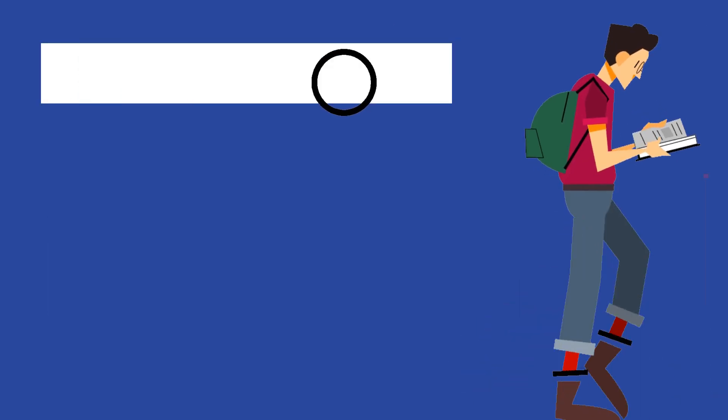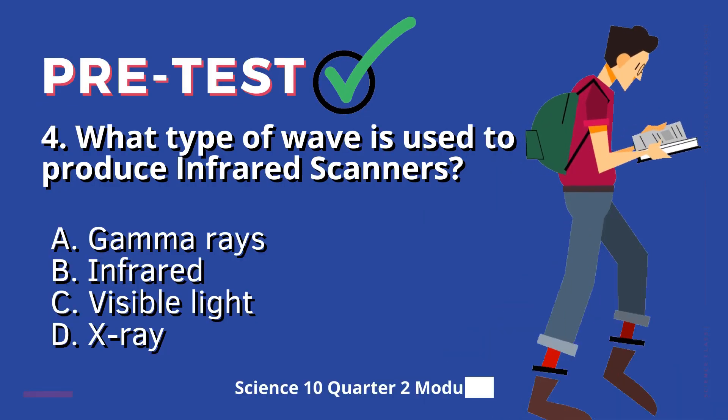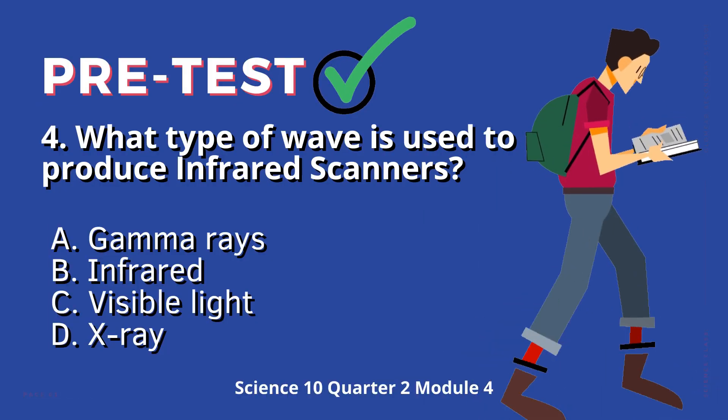Question 4: What type of wave is used to produce infrared scanners? A. Gamma rays. B. Infrared. C. Visible light. D. X-ray.